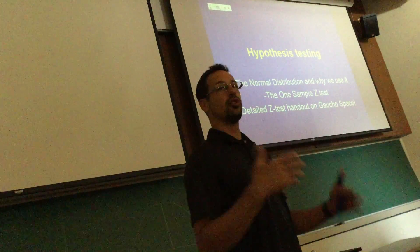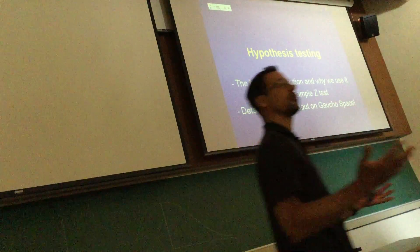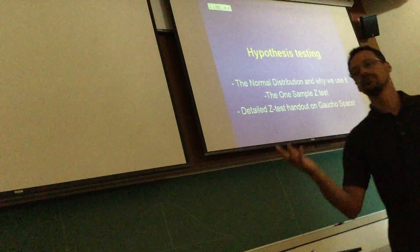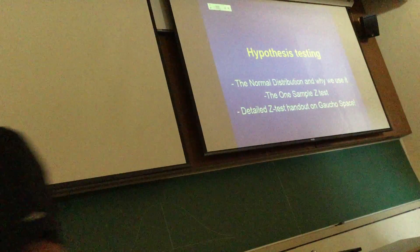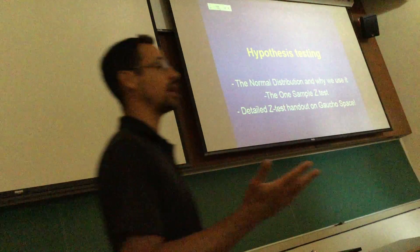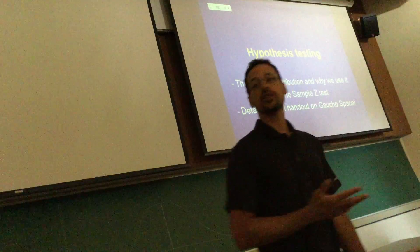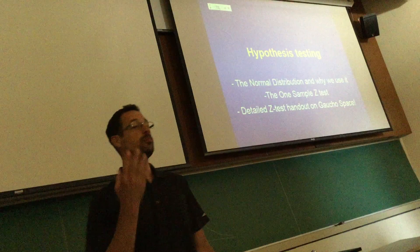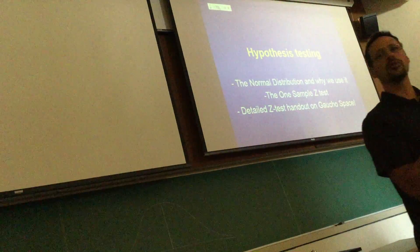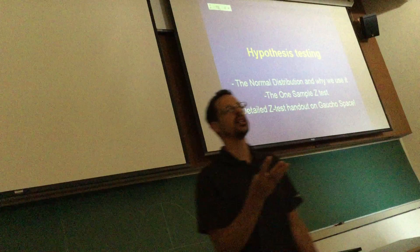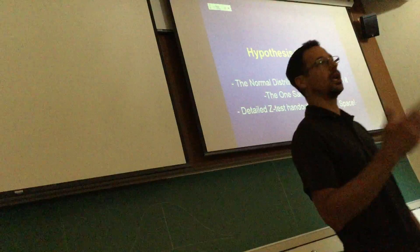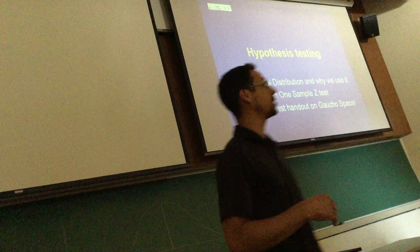And you all know what a normal distribution is. Someone give me an example of a normal distribution. Height of humans. So if we sampled everybody in this room, the height of everybody in this room, and we plotted it, it would most likely come out to be a normal distribution. If I picked four of you and sampled your height, would it be a normal distribution? Probably not. So generally the more samples you take, that's very important in approximating what a normal distribution is.